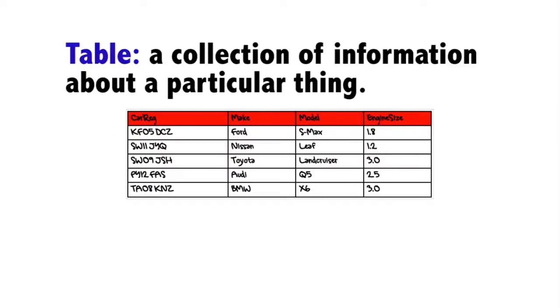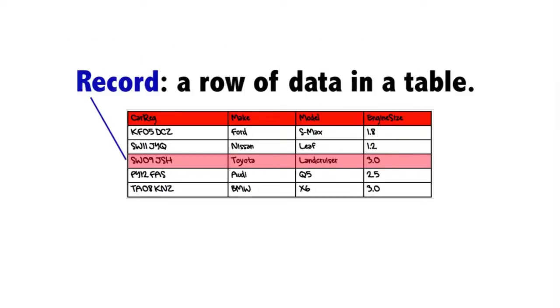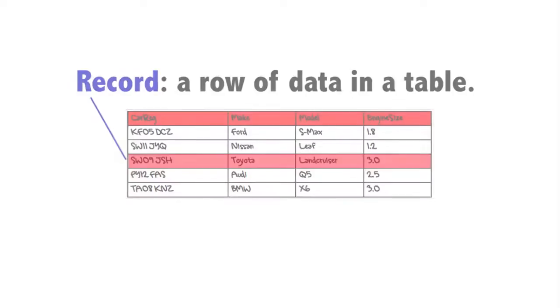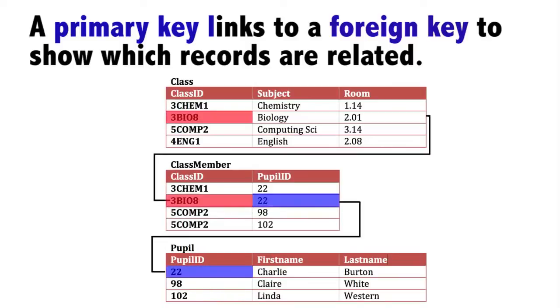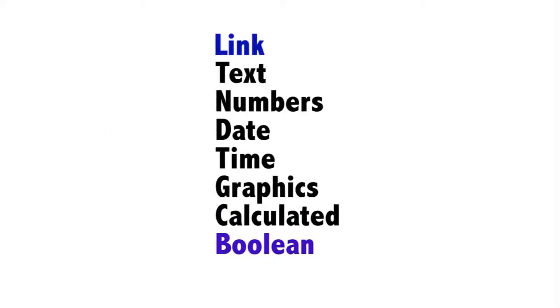Some things to remember: a table in a relational database is a collection of information. Each record is about one thing in the collection. Linked tables are two or more tables in a database that share a key field. The value of the key field is used to link the two tables together to provide more information. Link and Boolean are two new field types which we can add to the six we already know.